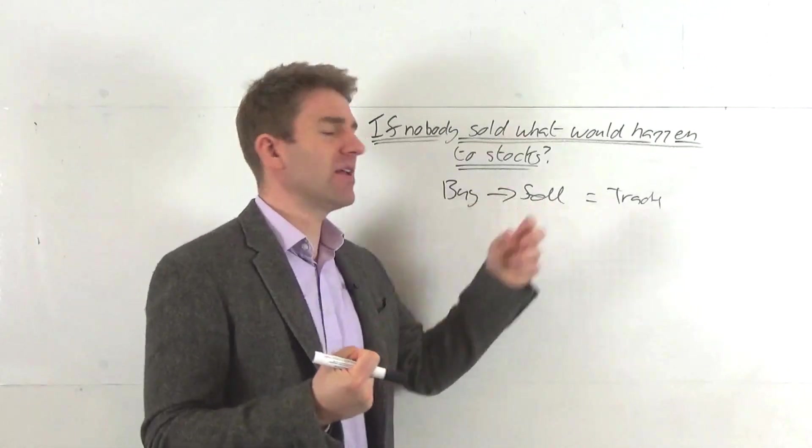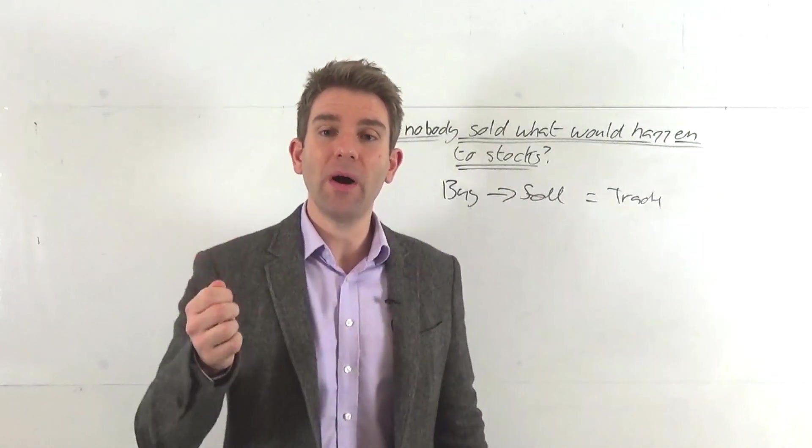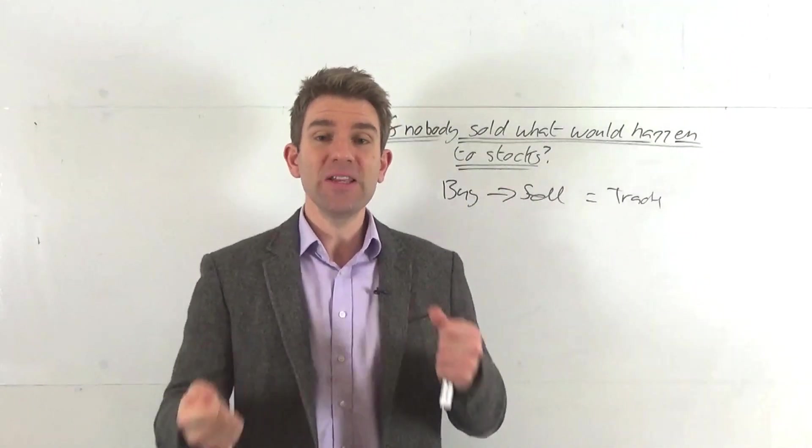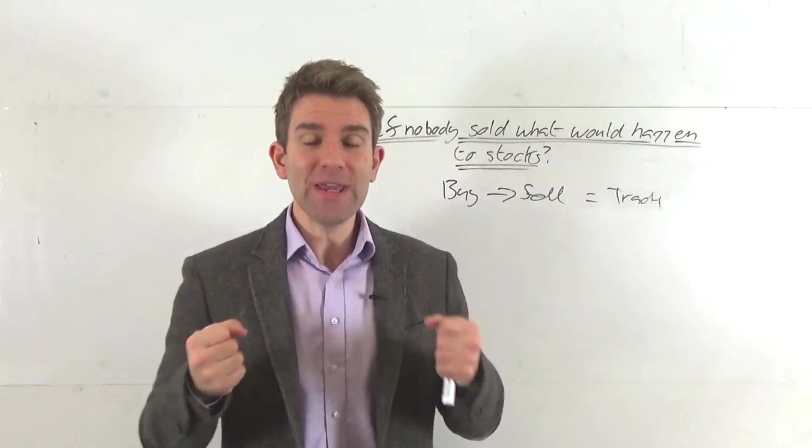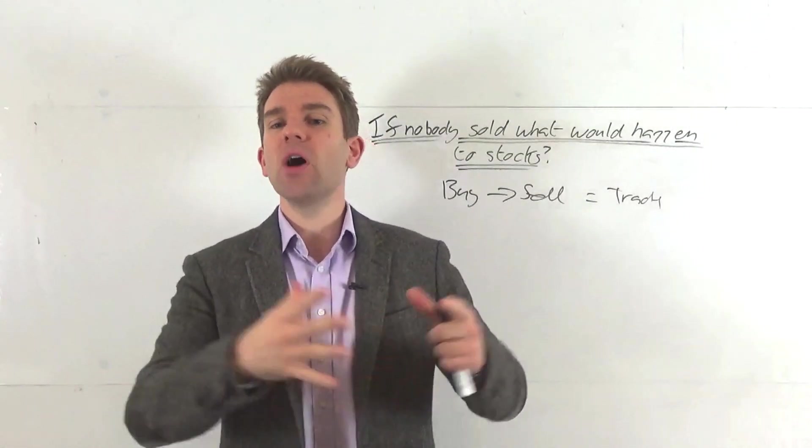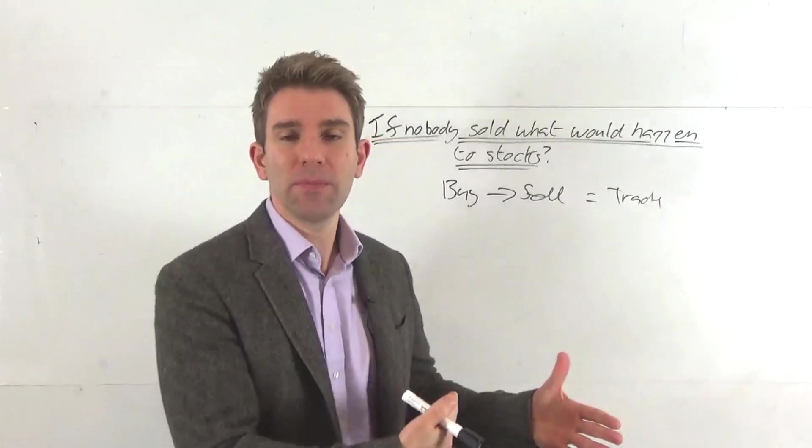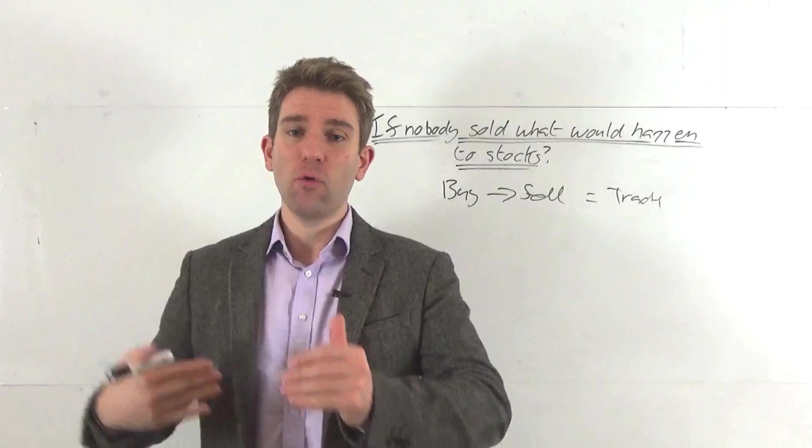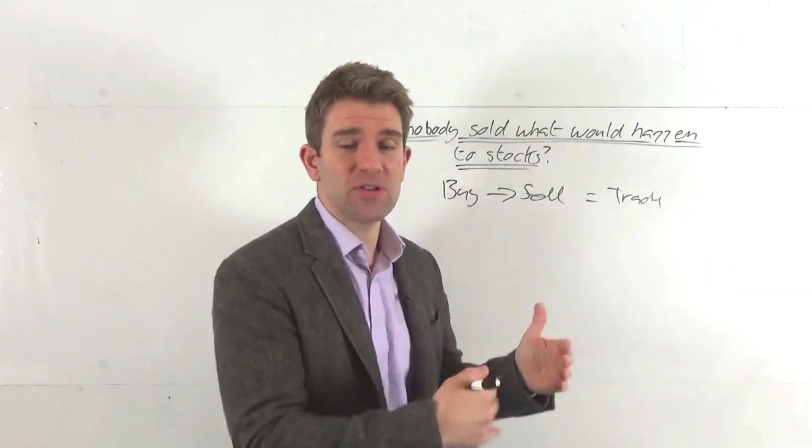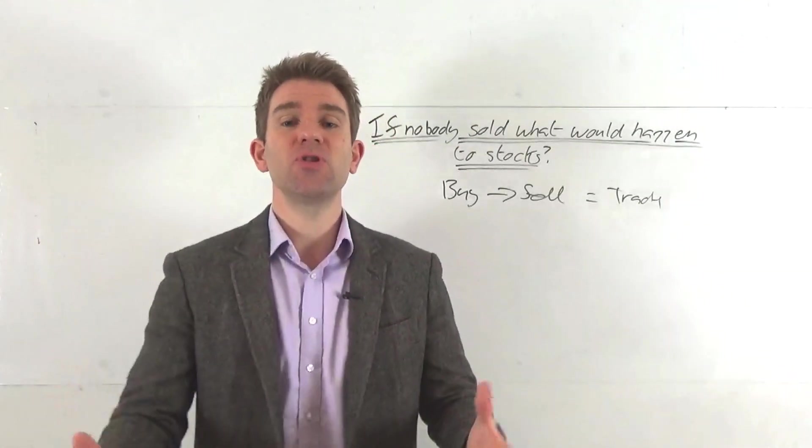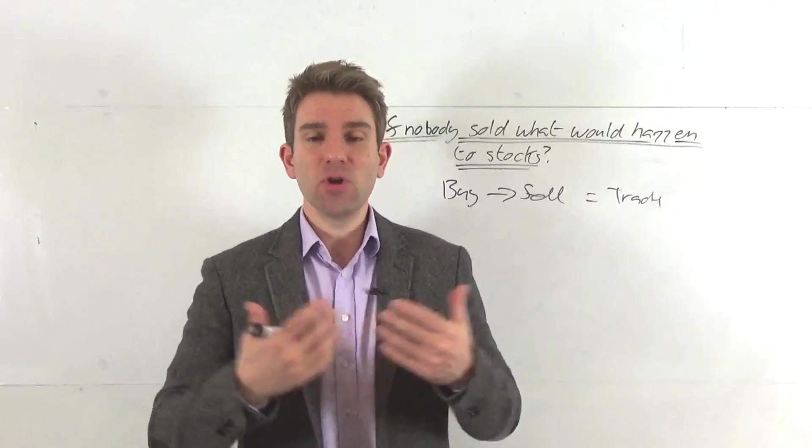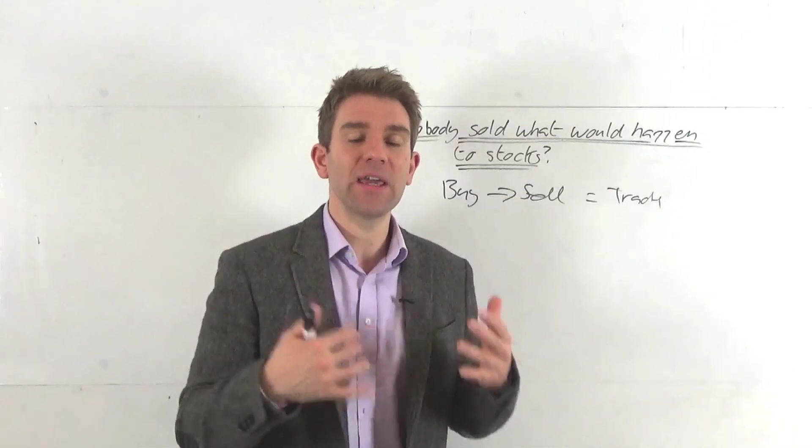For a trade to take place, we have to have a buyer and a seller. If I want to buy something, unless somebody sells it to me, we cannot have a deal. That's the same in the whole entire universe of stuff. If I want to buy something, unless I find a seller - if I want to buy a property, a car, an apple - the same. If I want to buy a stock, unless I can find somebody to sell me that, then there's no trade takes place.